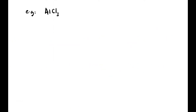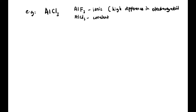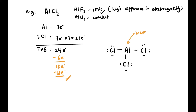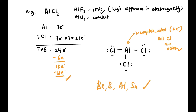Next example is AlCl3. Note that AlF3 is ionic bond, but AlCl3 is covalent because the electronegativity difference is not large enough for transfer. Al has 3 electrons, Cl has 7 × 3 = 21, so total = 24 electrons. Al is the central atom; we make three bonds using 6 electrons, leaving 18. We place all 18 on the terminal Cl atoms. Al is incomplete octet but stable — the terminal atoms are octet.